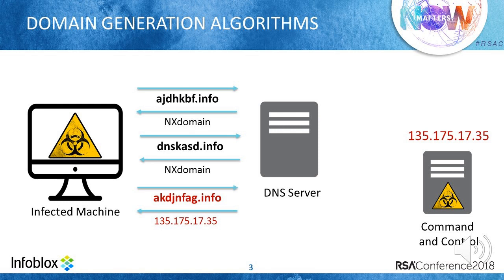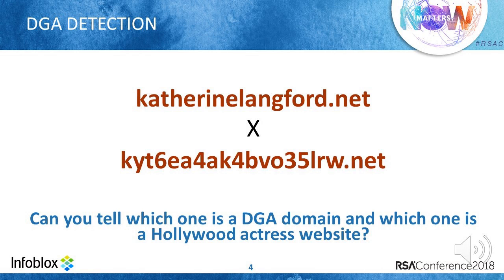DGA domain detection techniques based on machine learning models are very effective in detecting DGA domains in DNS traffic. The existing detection models aim at differentiating good domains, such as catherinelangford.net, from bad domains that look like a random string. The existing models work by differentiating probability distributions.